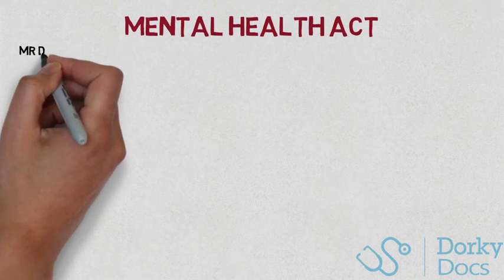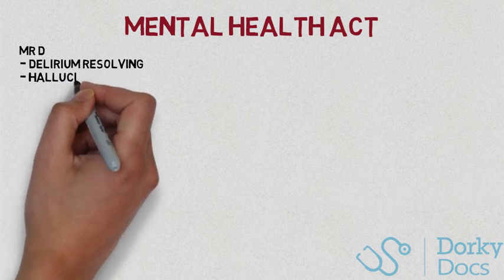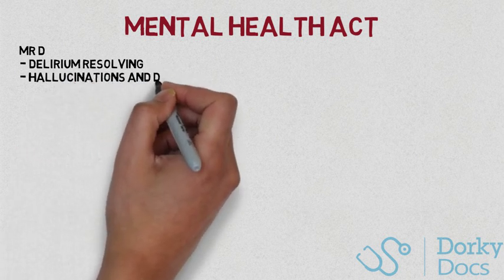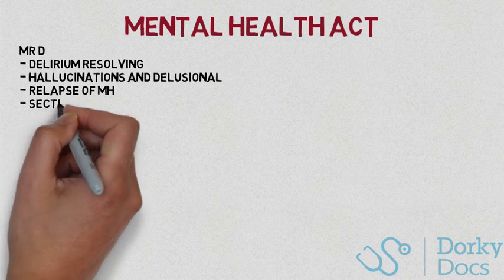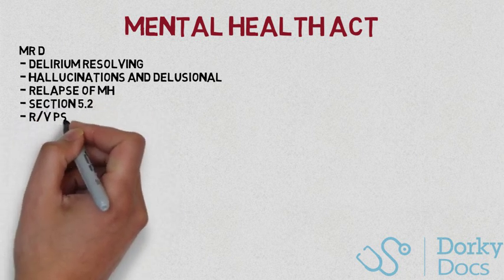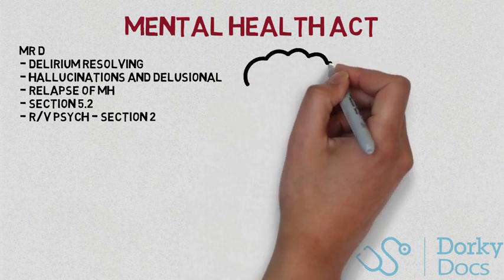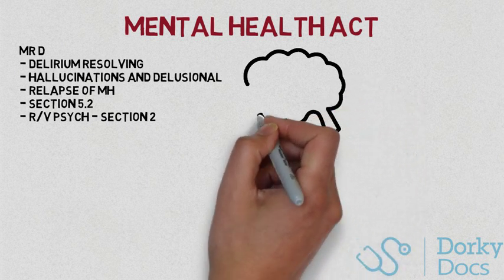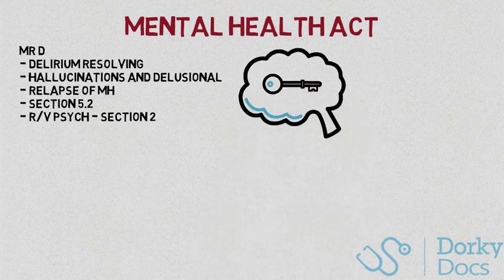Back to Mr. D, whose delirium is slowly resolving. A few days later, he is seen to have third-person auditory hallucinations where he feels that aliens are present to abduct him. He keeps trying to pull out his cannulae and abdominal drain despite advice. You sensibly seek the advice of the Mental Health Liaison Team, who advise you to detain him under Section 5.2 if you feel it's appropriate. He is seen by the on-call psychiatrist later that evening, who places him under Section 2 of the Mental Health Act and initiates antipsychotics. His capacity regarding ongoing rehab care is also assessed and he is deemed not to have mental capacity. As this man is having a relapse of his schizophrenia in the context of improving delirium, it is entirely appropriate to detain him under Section 5.2.